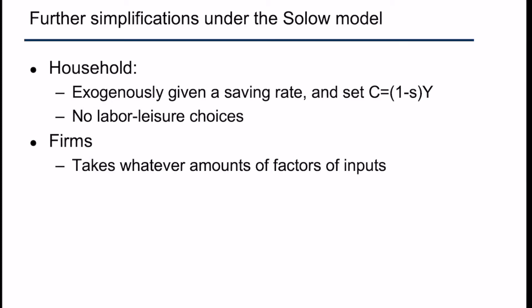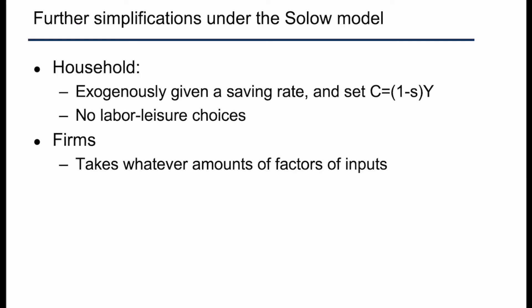For firms, to make things easier, we assume the firm takes whatever amount of factor input is available in the market and puts it into the production process. Therefore, firms do not need to solve a profit maximization problem. They simply go to the market, acquire all available factor inputs, and use them in production. What we do need for the firm is a production technology, which is assigned by the model designer and will be characterized by an equation later.